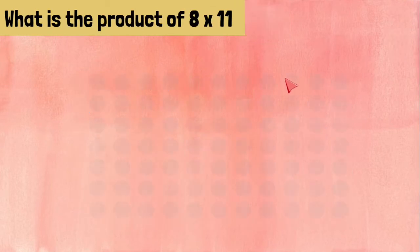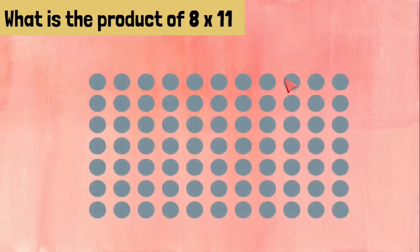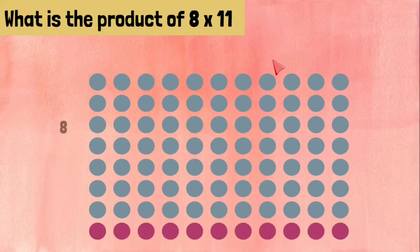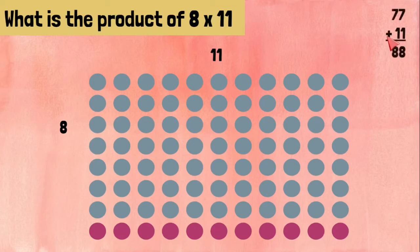8 times 11. We need 8 rows with 11 on each row. We can add the 77 blue ones plus 11 purple ones, and that gives us 88.